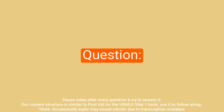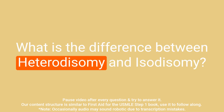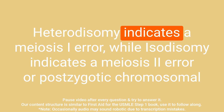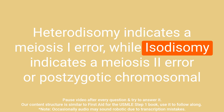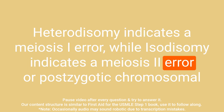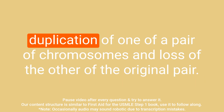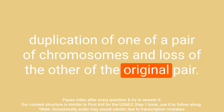Question: What is the difference between heterodisomy and isodisomy? Answer: Heterodisomy indicates a meiosis I error, while isodisomy indicates a meiosis II error or post-zygotic chromosomal duplication of one of a pair of chromosomes and loss of the other of the original pair.